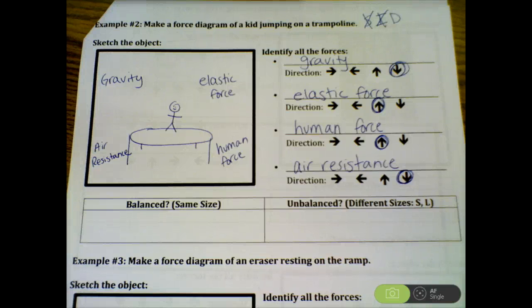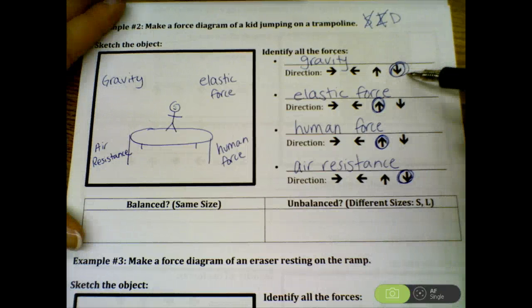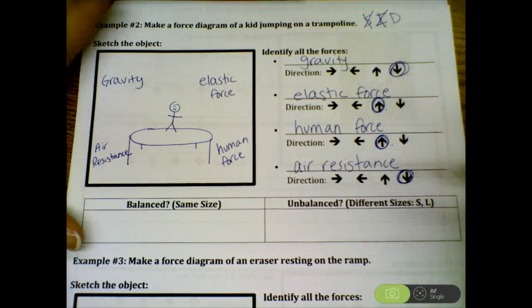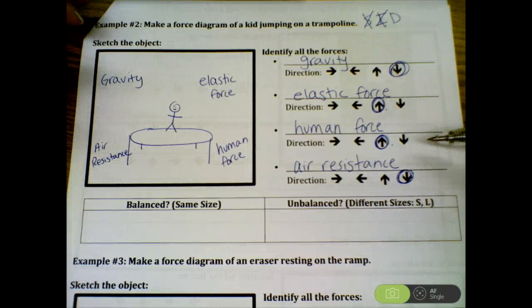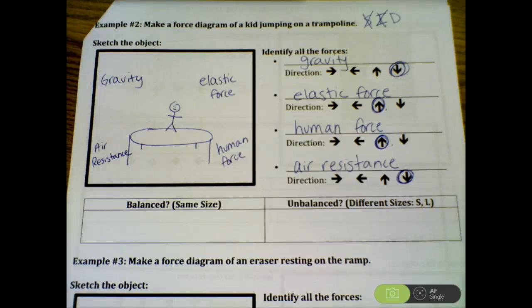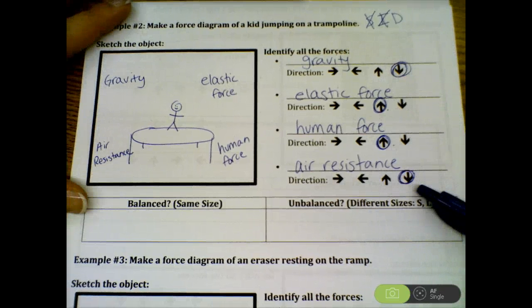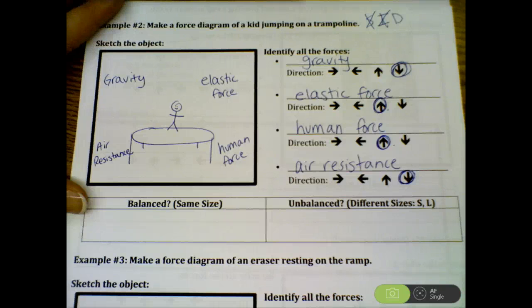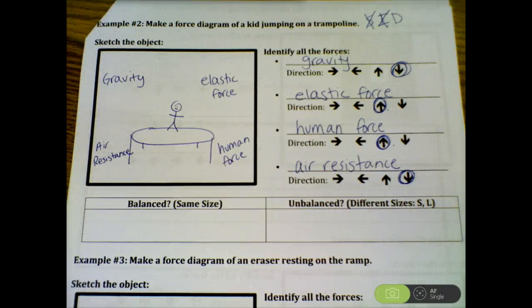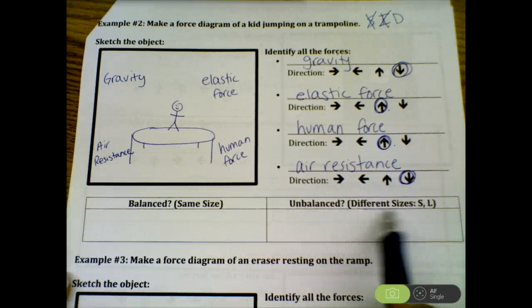When it comes to the sizes of these forces, you need to think about whether or not these forces are balanced or unbalanced. We have two forces that are going down and we have two forces that are going up. We know that gravity and air resistance are pushing down or pulling down. And we know that elastic and human are going up. Since this person is moving, and we can assume at a non-constant speed, then we know that these forces are unbalanced. So they are going to be different sizes.